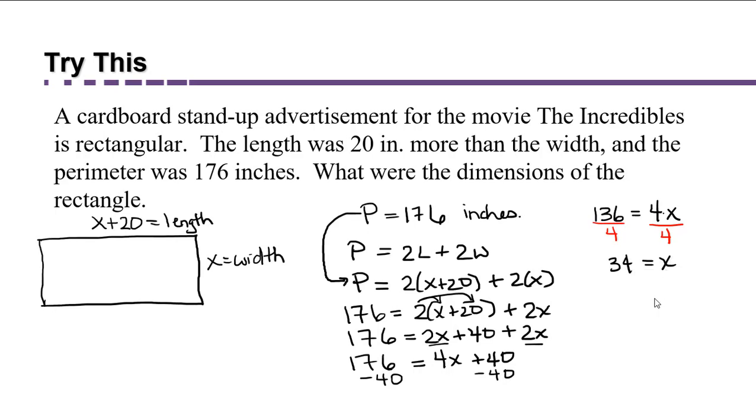Now once you have found your unknown, your x, let's just remind ourselves what that represented. In my diagram I had labeled what x represented, the width. So our width is 34, and the units were inches. So we have 34 inches. And we also now know that 34 plus 20, or 54 inches, is our length. And we were asked what were the dimensions of the rectangle, so we just found them. The dimensions are 34 inches by 54 inches.